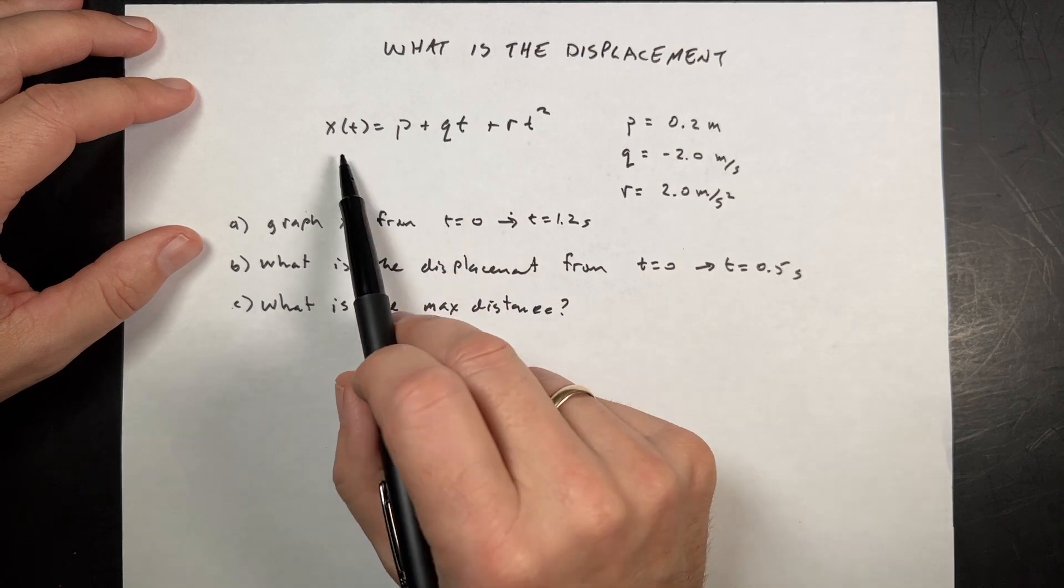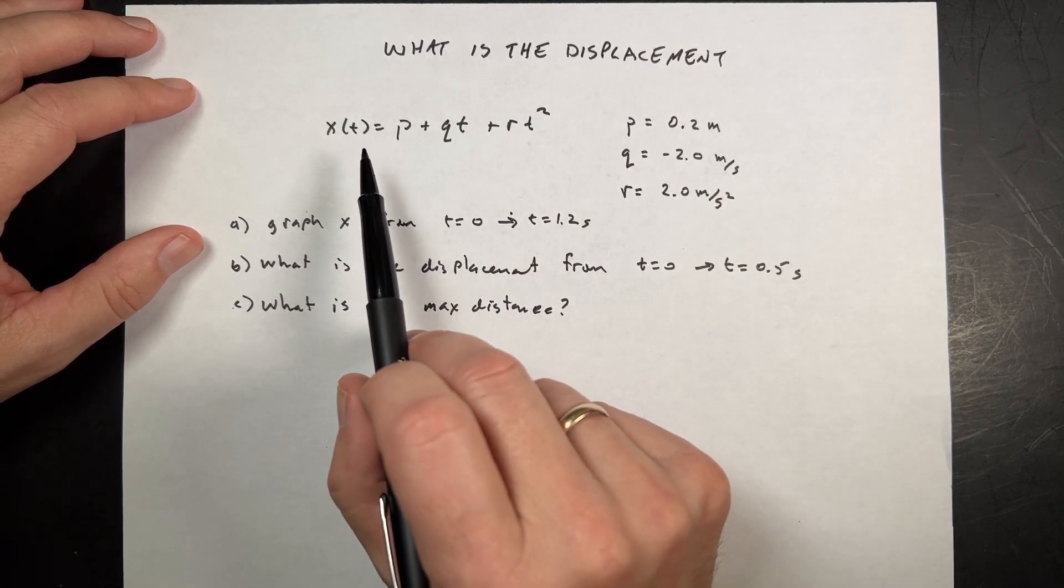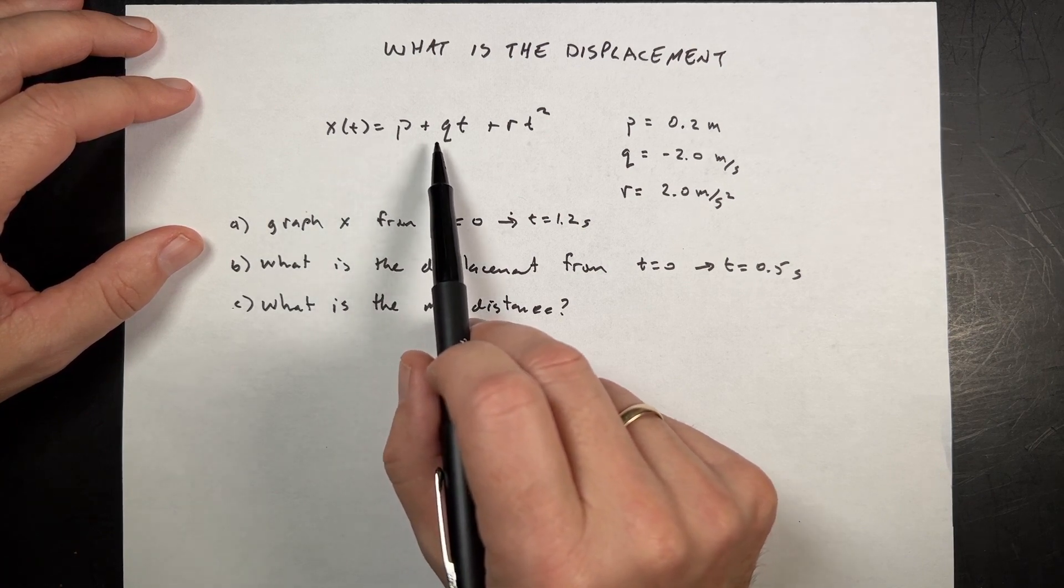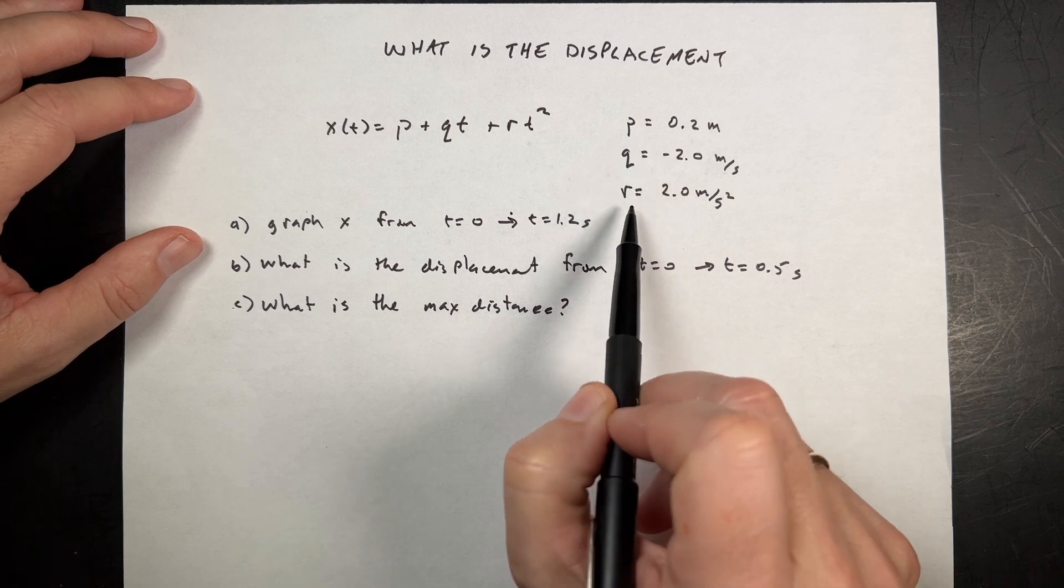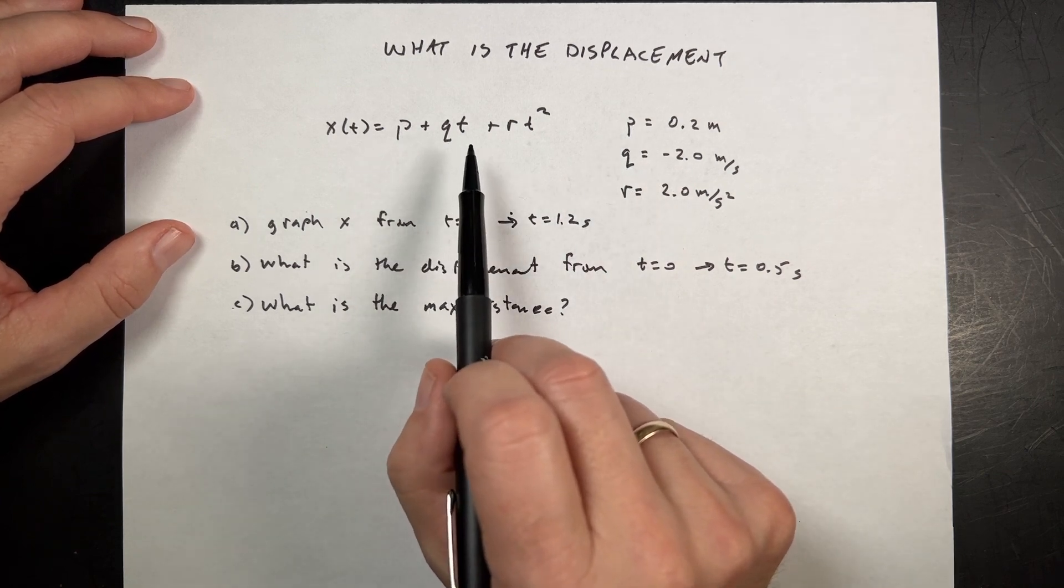So it says there is an object that has a motion described by the following equation. x is a function of t is p plus qt plus rt squared. And they give values for p, q, and r.